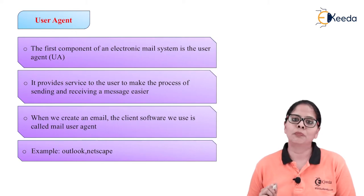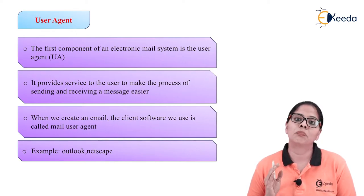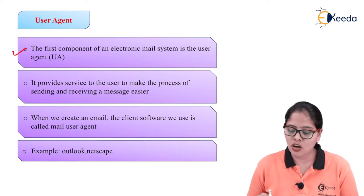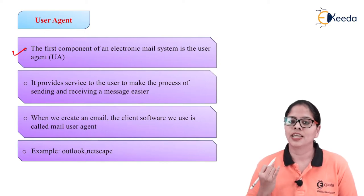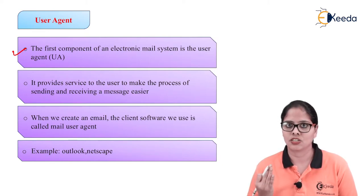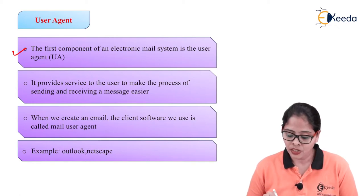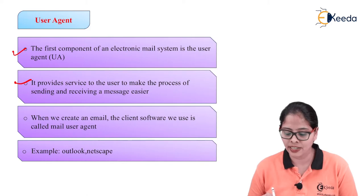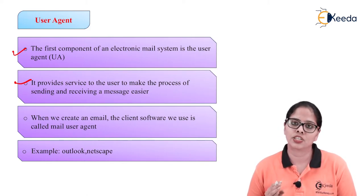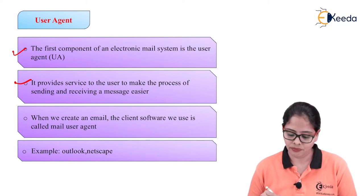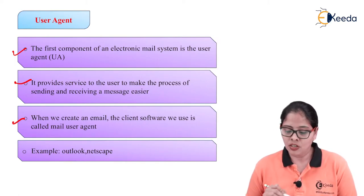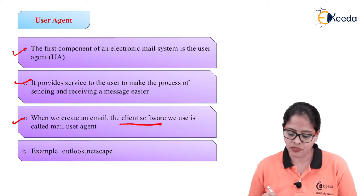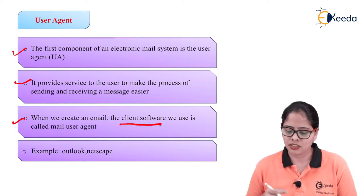Now let us discuss what is meant by the user agent. The user agent is nothing but your mailbox. It is the first component of the electronic mail system. There are three important components: the first is the user agent, second is the message transfer agent, and third is the message access agent. The user agent provides the service to the user to make the process of sending and receiving messages. When we create an email, the client software we use is called the mail user agent. Examples are Outlook and Gmail.